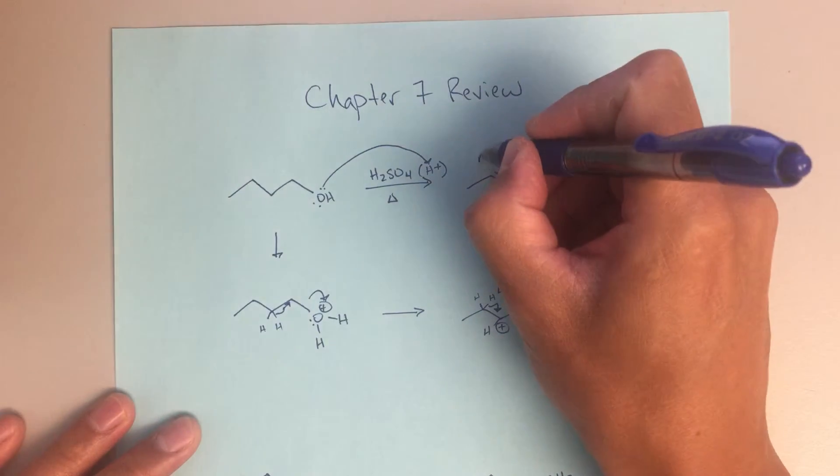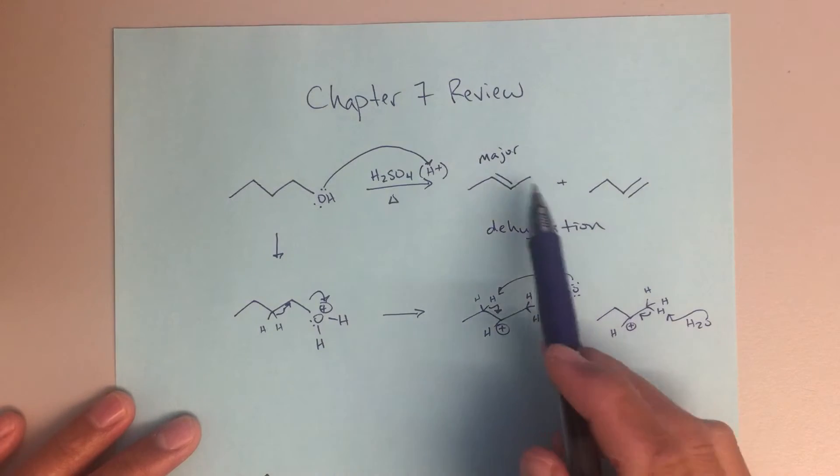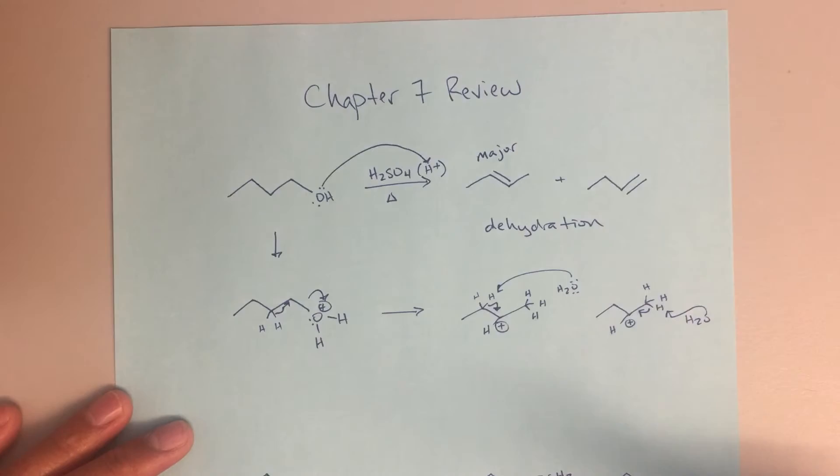I do want to point out this will be our major product. And the reason for this being the major product is simply that we've got an internal double bond, an internal alkene versus a terminal alkene.